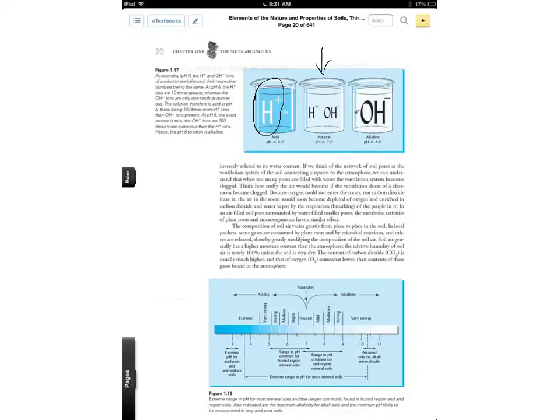If we have alkaline soils, we have a very high amount of hydroxyl ions in our soil solution and not very many hydrogen ions. That's how we define pH in a solution - what's actually contained in that solution.